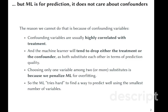The reason is simple. Machine learning was built for prediction. It does not care about confounders, whereas confounders are important when we want to have proper causal inference. Confounding variables are usually highly correlated with treatment because they affect treatment and they affect y.